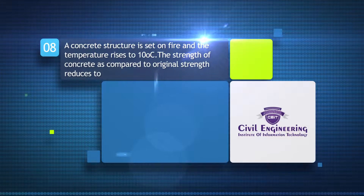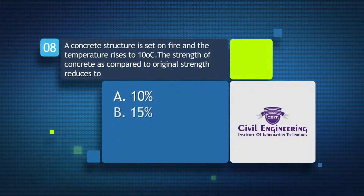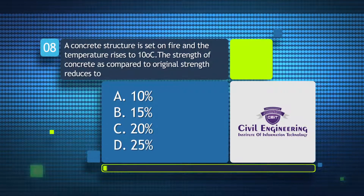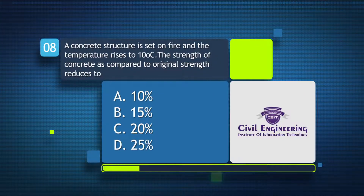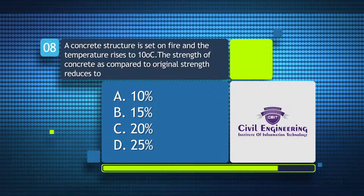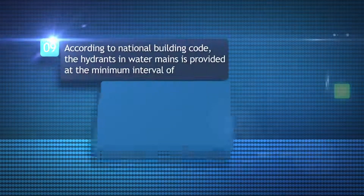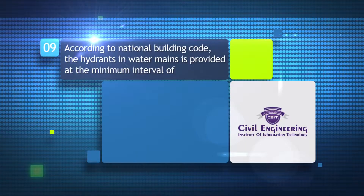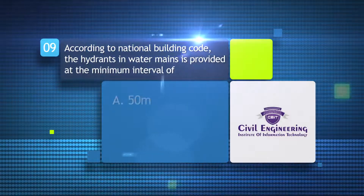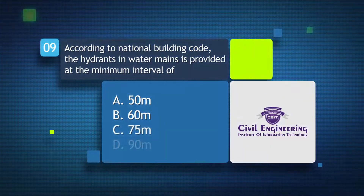...as compared to original strength reduces to: A) 10%, B) 15%, C) 20%, D) 25%. According to the national building code, the hydrants and water mains are provided at a minimum interval of: A) 50 meters, B) 60 meters, C) 75 meters, D) 90 meters.